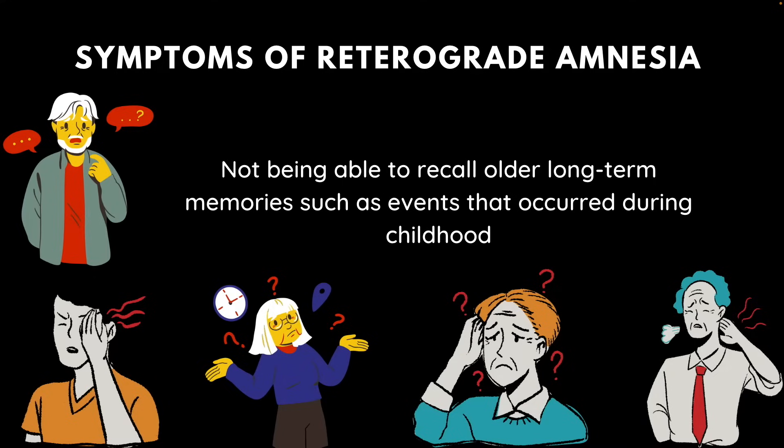Some people only lose memories of events that happened before they began to experience retrograde amnesia, meaning they can still form new memories. But in other cases, people will have both retrograde and anterograde amnesia, meaning they will also have the inability to create new memories.